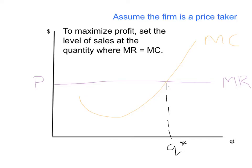While we've followed the simple rule, the real question is: why does this work? Why will Q star be the profit-maximizing output? To see that, let's pick a different quantity — a quantity to the right of Q star. Let's call that Q1. What would happen if the business decided to produce Q1 instead of Q star? How can we see that this leads to less profit, not more?